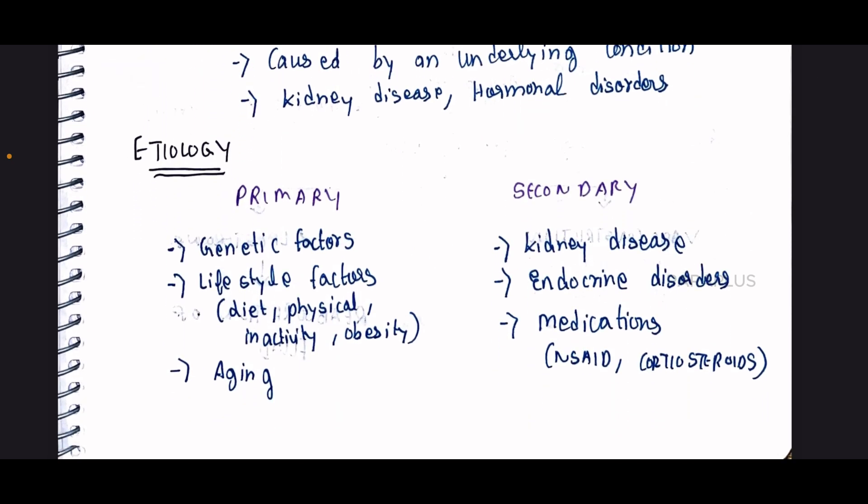What is the difference in etiology? Primary hypertension involves genetic factors and lifestyle factors — our diet, physical activity. If there is no physical activity, that contributes to hypertension. Obesity also means those individuals are more prone to hypertension. And finally, aging — as age increases, for example at 40, 50, 60, even if there is no other cause, we can develop hypertension.